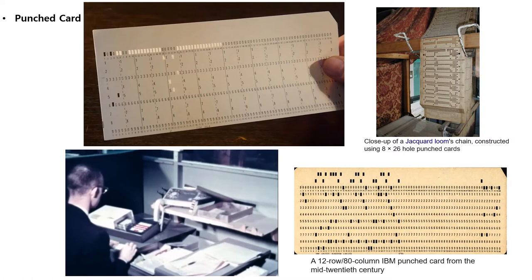The IBM 12-row 80-column punch card format came to dominate the industry. Many early digital computers used punch cards as a primary medium for input of both computer programs and data. While punch cards are now obsolete as a storage medium, as of year 2012, some voting machines still used punch cards to record votes. Punch cards were hugely influenced and inspired by Jacquard's loom punch cards. Here in the picture on the right hand side is shown a close-up view of a Jacquard's loom chain constructed using 18 to 26 hole punch cards. These were used for developing design patterns on the fabrics.